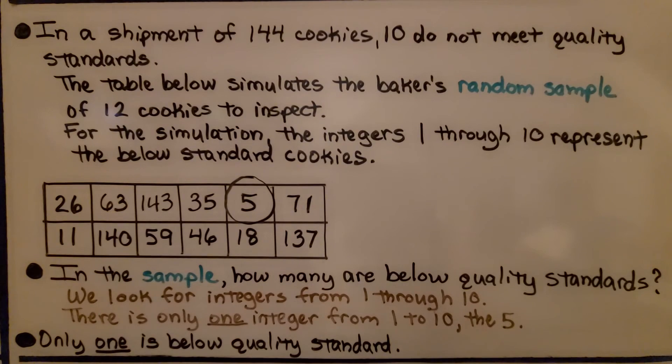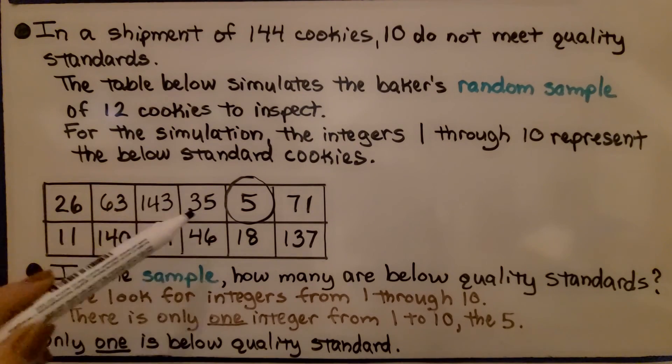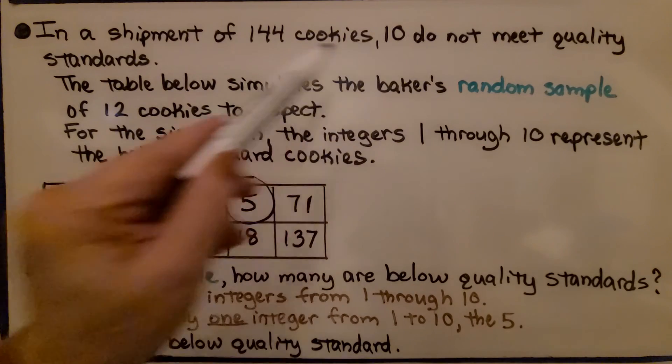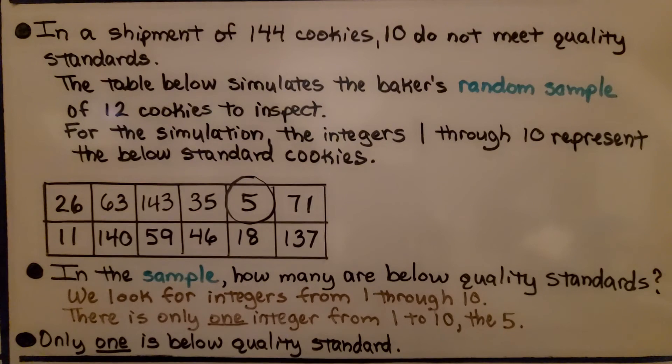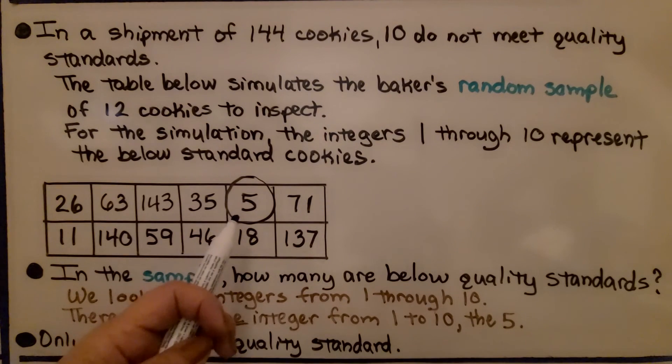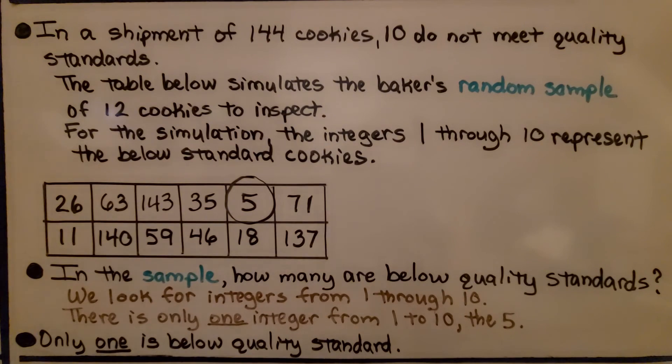That tells the baker that 1 in each 12 cookies is probably not to quality standards. Now, that doesn't mean that there definitely is 1 out of 12. That's just a random sample, and it's a simulation.